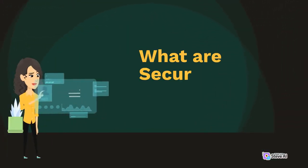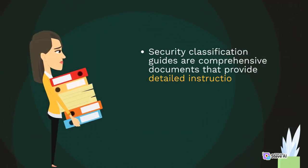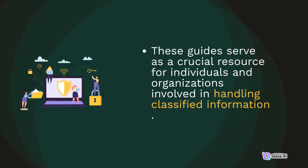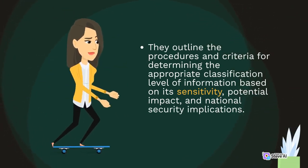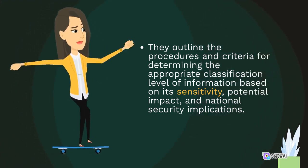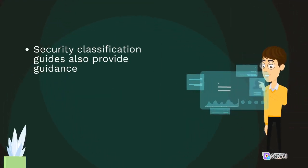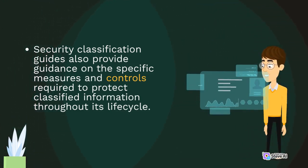What are Security Classification Guides? Security Classification Guides are comprehensive documents that provide detailed instructions and guidelines for classifying and protecting sensitive information. These guides serve as a crucial resource for individuals and organizations involved in handling classified information. They outline the procedures and criteria for determining the appropriate classification level of information based on its sensitivity, potential impact, and national security implications. Security Classification Guides also provide guidance on the specific measures and controls required to protect classified information throughout its lifecycle.